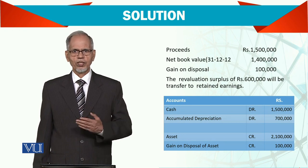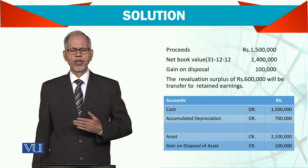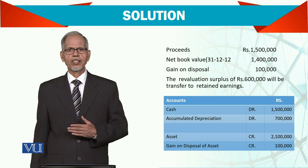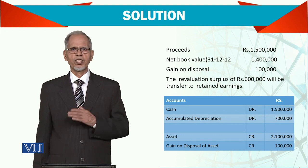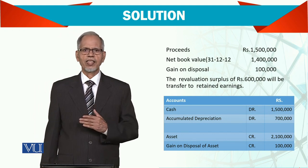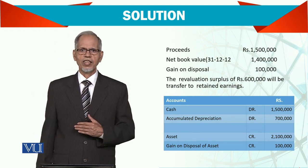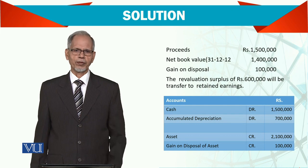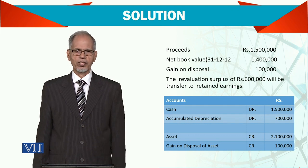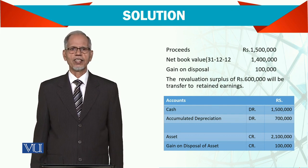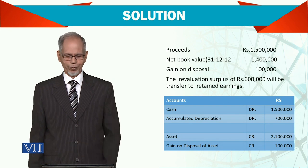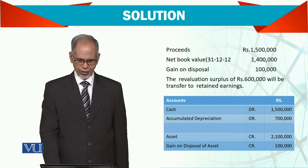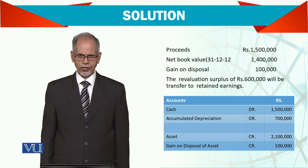So this is how a revalued asset is depreciated and ultimately sold. Any surplus on revaluation should be reversed, and any gain on sale should be taken to the income statement. The surplus on revaluation goes to the retained earnings statement. Thank you very much.